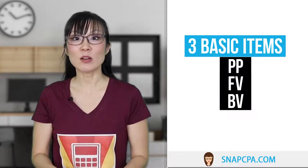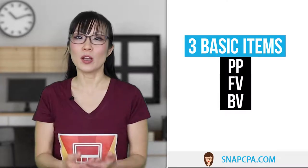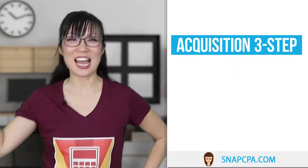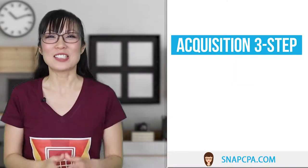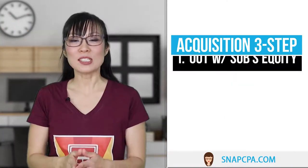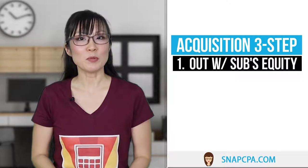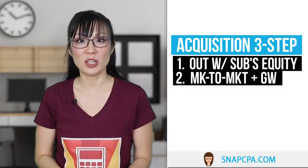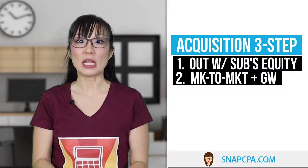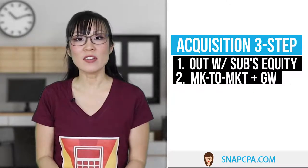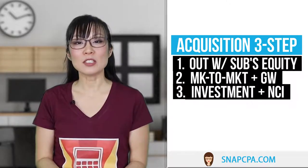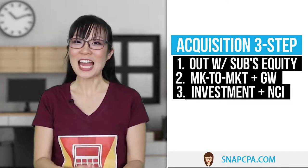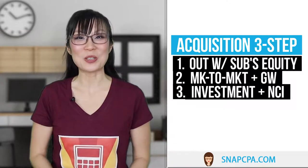Then, to consolidate the acquisition, we go to our acquisition three-step. Step one: out with sub's equity. Step two: mark to market and excess to goodwill. And step three: get rid of the investment and establish the non-controlling interest. With that in mind, let's go to the board.